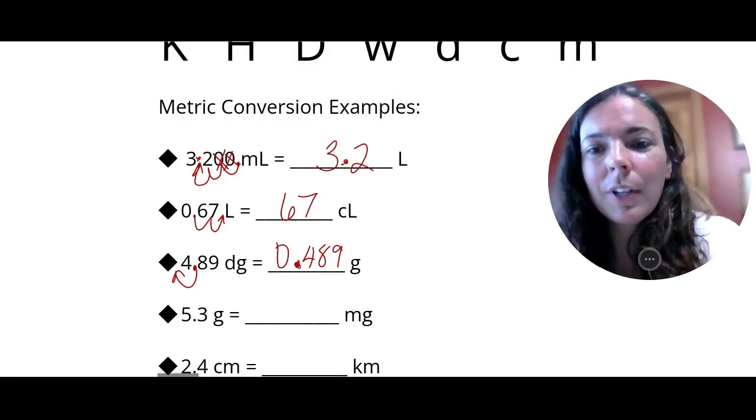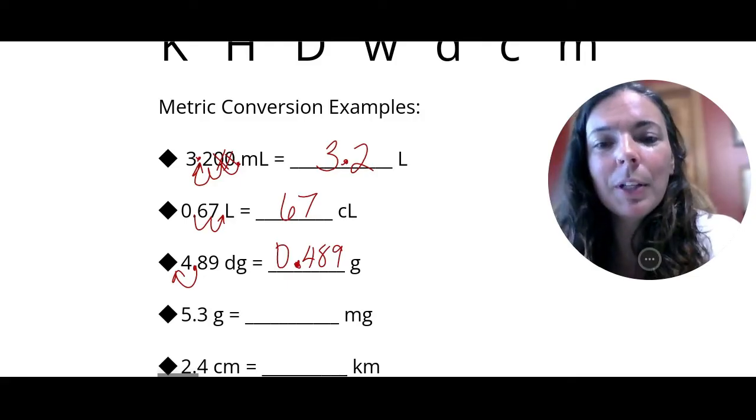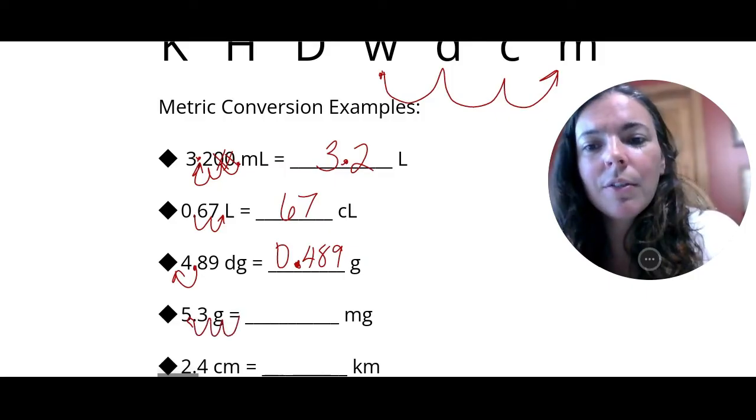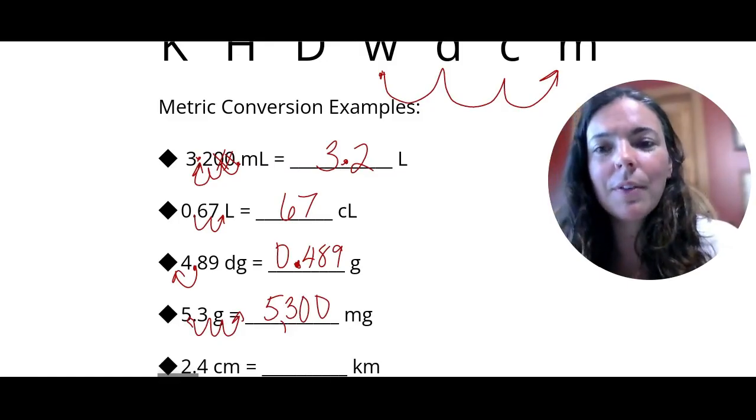So what about 5.3 grams? Well, if I'm going from grams to milligrams, I'm going to start at my whole unit once, twice, three times to the right. Once, twice, three times to the right. So I have to add in two zeros here. So that would be 5,300.